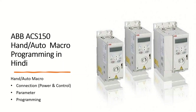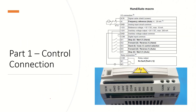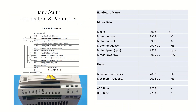In this video we learn how to set up Hand Auto macro programming in the ABB ACS 150 drive. We will cover control and power connections, parameter settings, and how to enter parameters in the drive. First part: control connection. In this figure you can see the control wiring. Next part covers the parameters for Hand Auto macro.